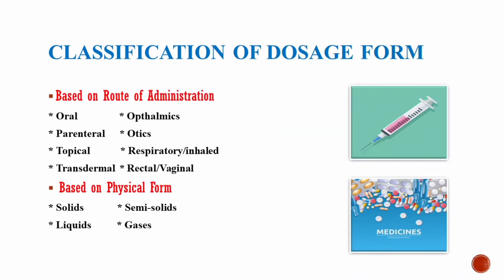Dosage forms are basically divided into various types on the basis of route of administration or on the basis of physical form. On the basis of route of administration, dosage forms are divided into oral, parenteral, topical, transdermal, ophthalmic, otic, respiratory or inhaled, and rectal or vaginal dosage forms.